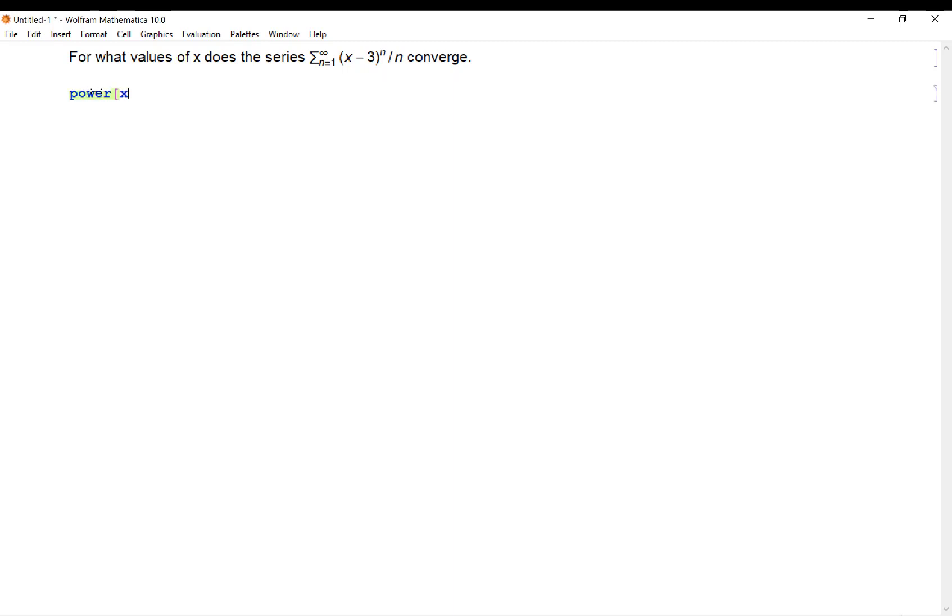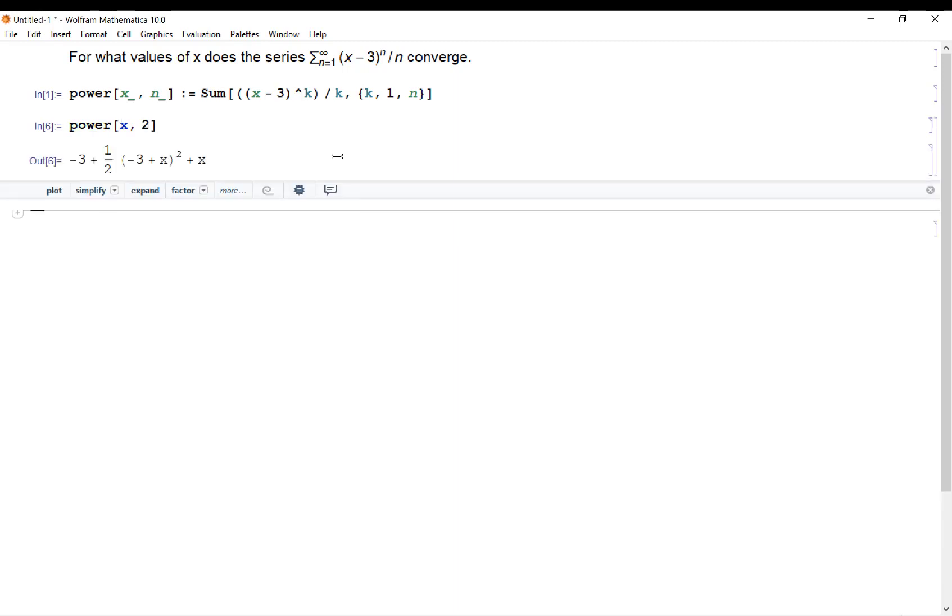I want k going from 1 to n. Now that I have this function defined, if I plug in something like x equals 2 into this function, I'm getting the second partial sum of my infinite series. And what we're trying to figure out is if I plug in certain values of x and let n go to infinity, do I get something finite or not?